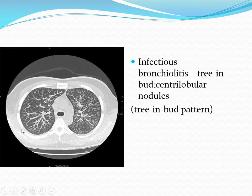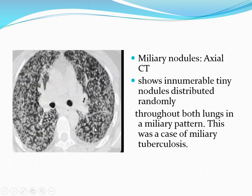This is another example of a tree-in-bud pattern. Axial CT shows innumerable tiny nodules distributed randomly throughout both lungs in a miliary pattern, in this case of miliary tuberculosis.